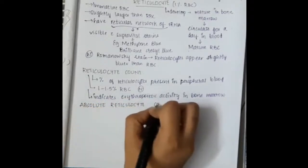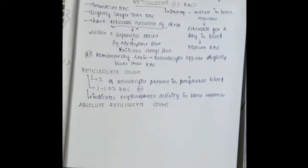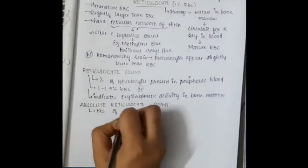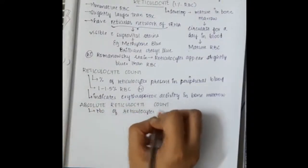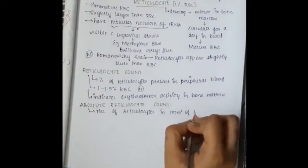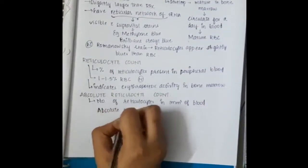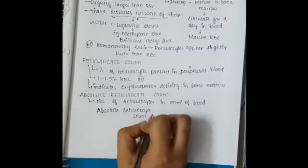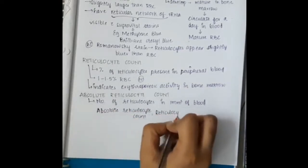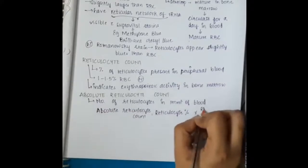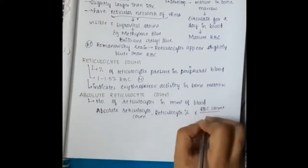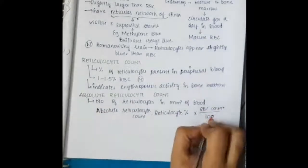Then we have absolute reticulocyte count. Absolute reticulocyte count is the number of reticulocytes present in 1 mm of blood. This equals reticulocyte percentage into RBC count by 100.